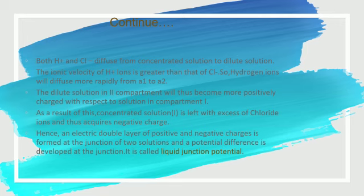Hydrogen ions will diffuse more rapidly from A1 to A2. The dilute solution in compartment 2 will thus become more positively charged with respect to the solution in compartment 1. Since A1 is greater than A2, in compartment 1 there is concentration A1 and in compartment 2 there is concentration A2. Ions from A1 will move to A2, and their speed will be greater.